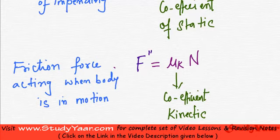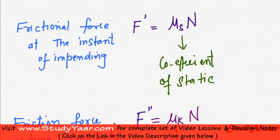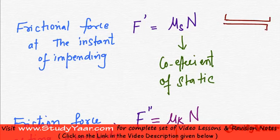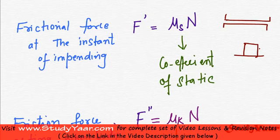Understand one thing over here: your μ is not dependent upon the surface area; rather it is just dependent upon the type of surfaces, which is basically dependent upon the type of materials used. So if this is ground and you have a steel box, there is going to be a different μ as compared to if this is a concrete floor and this is a wooden box. So your μs is dependent upon the material and not on the area of the surface.